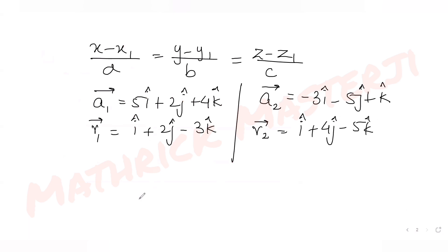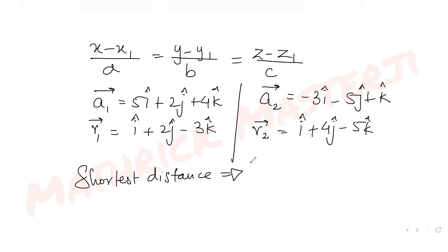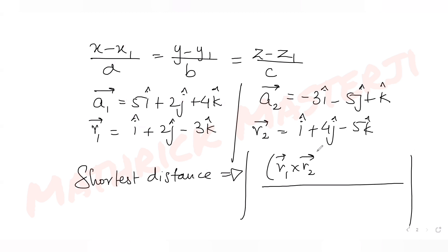So we have the two line equations, from which we get a1, r1, a2, and r2. Once we have those, the shortest distance between the two lines is given by the formula: the mod of the dot product of (r1 × r2) with (a2 − a1), divided by the mod of (r1 × r2).